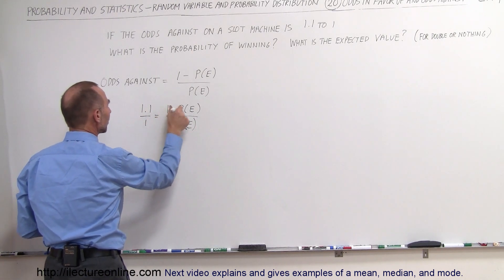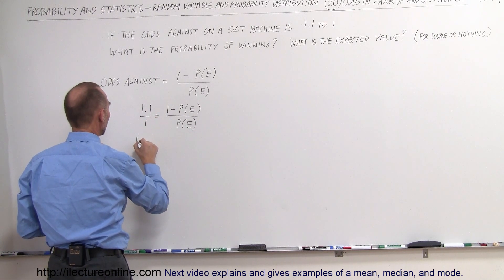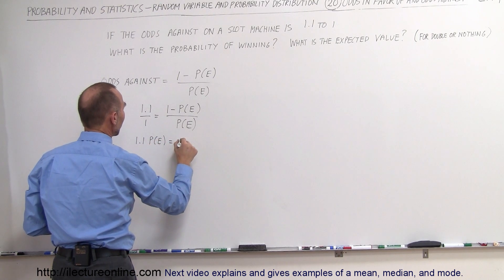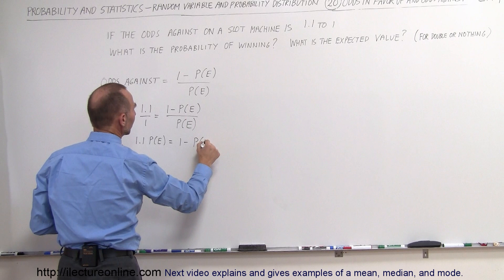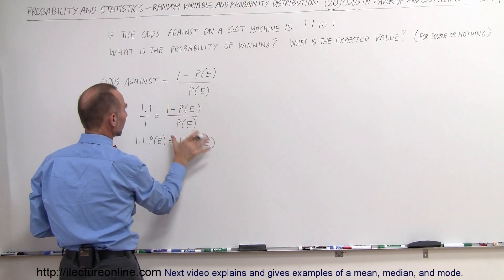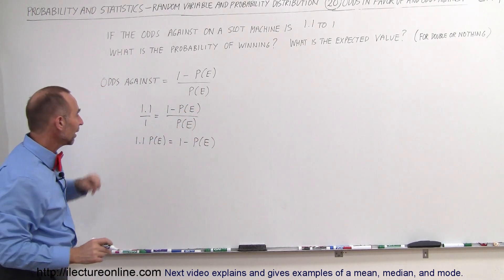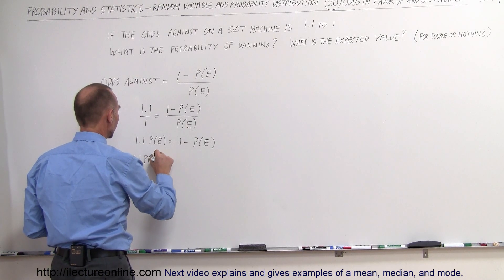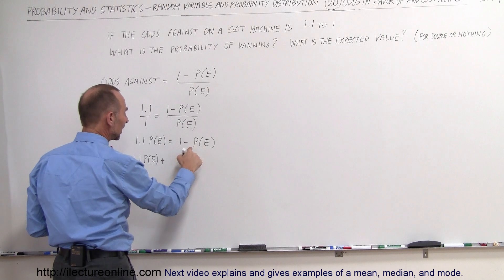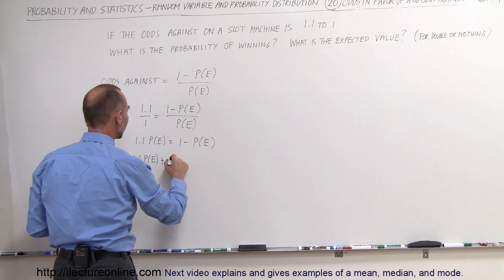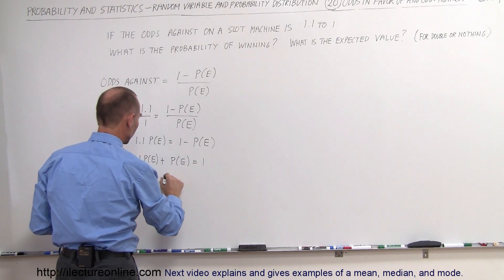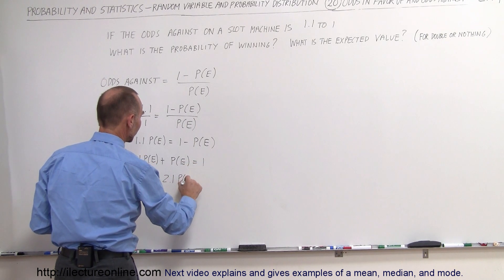We put that over here, put that over there. So we have 1.1 times the probability of the event occurring is equal to 1 minus the probability of the event occurring. Of course, 1 times that, you just keep that. Now we move this over to the left side. So we have 1.1 times the probability of the event occurring plus, because the negative changes to a plus when you cross the equals sign, 1 times the probability of the event occurring equals 1.